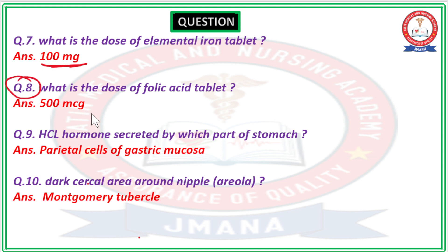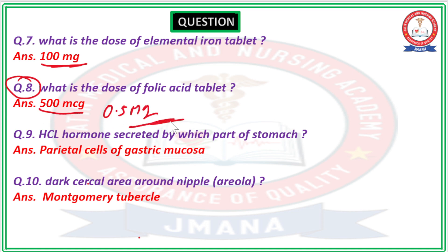Question number 8: What is the dose of the folic acid tablet? The dose of the folic acid tablet is 500 mcg, or 0.5 mg.